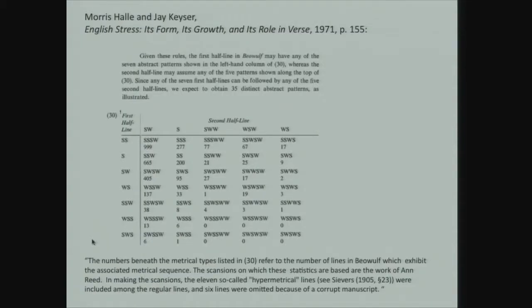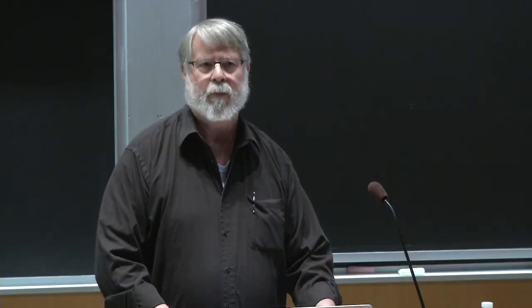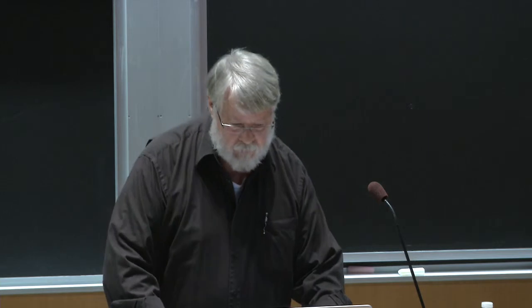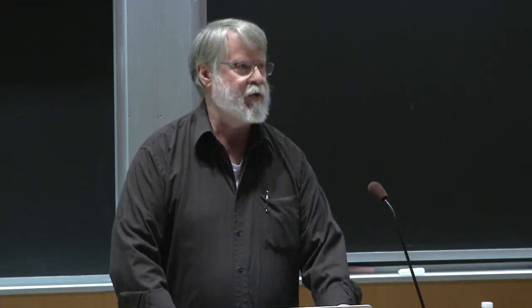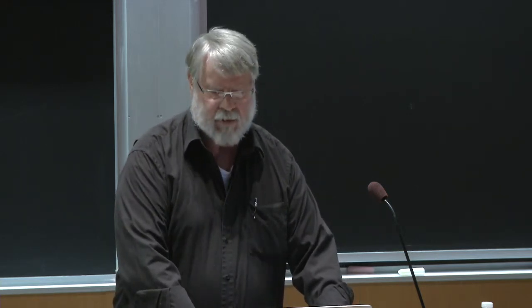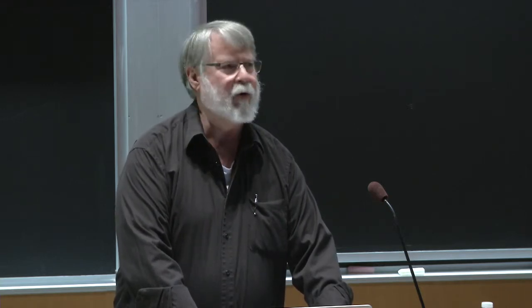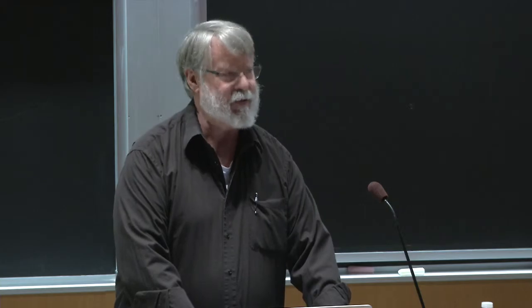I'm going to start with something reproduced in Bruce's handout — a table from Halley and Kaiser's English Stress: Its Form, Growth, and Its Role in Verse, 1971 — which gives a table of possible metrical structures for verse in Beowulf. The instances in the table were counted by Ann Reed, who was then a student of Jay's. I don't think her scanned version of Beowulf is available online, but perhaps this can be remedied.